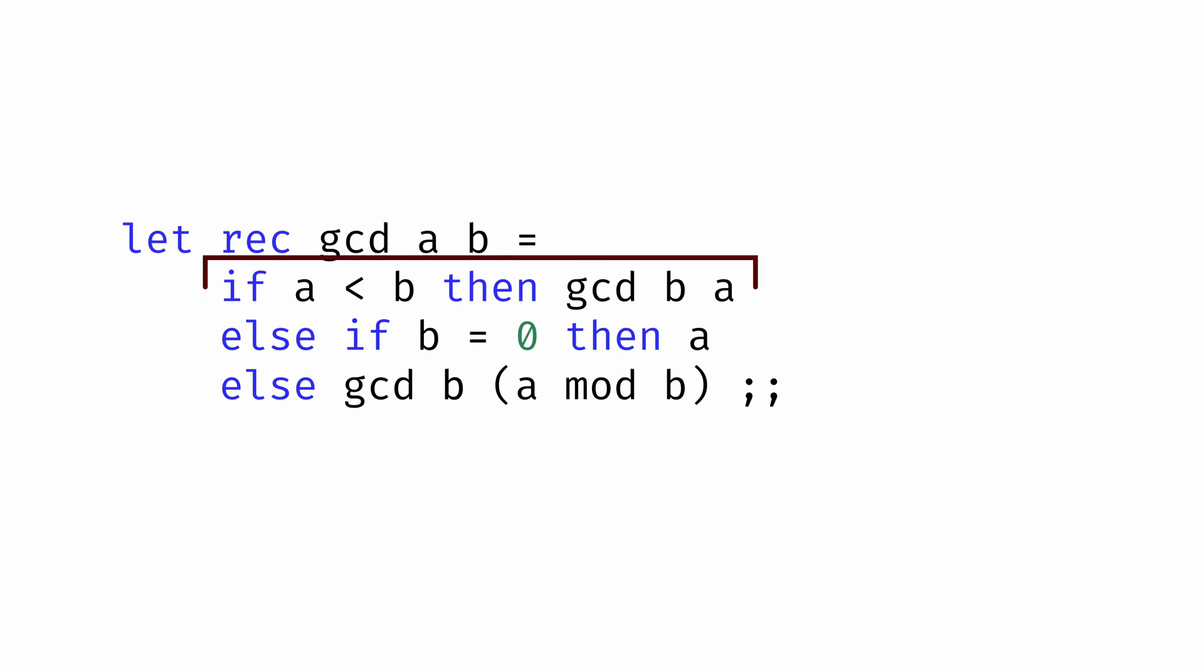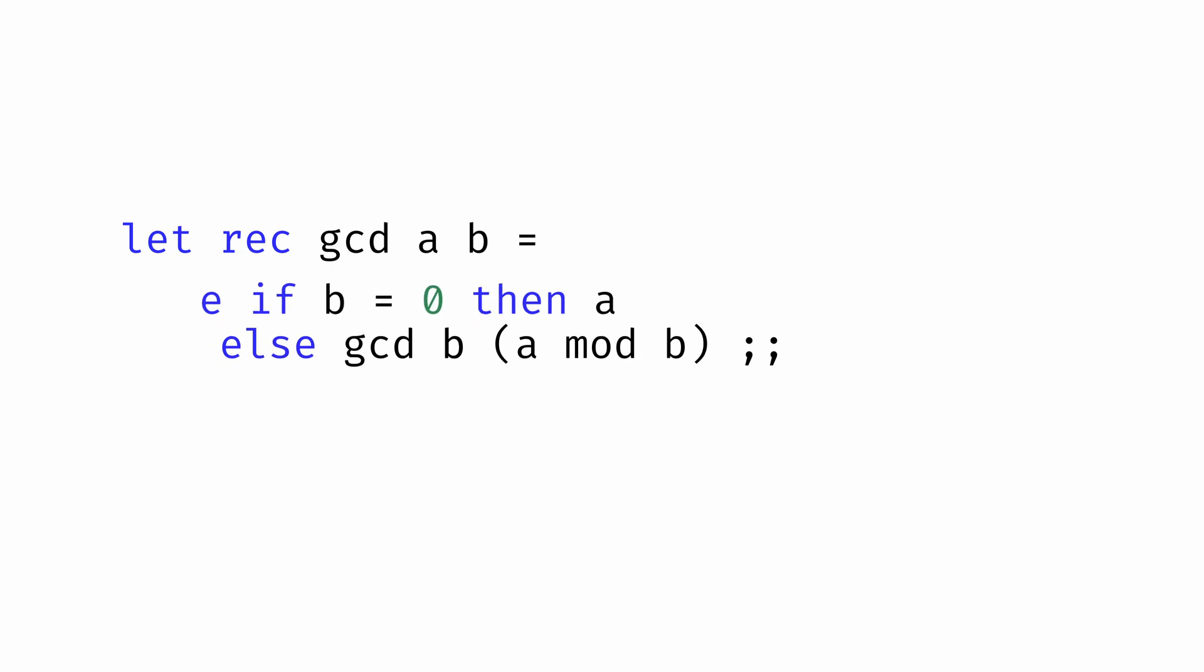And now, let's look at this first line of the function, where we check if a is less than b. What would happen if we didn't include this line? Well, we'd call the function again on b and a mod b. But if a is less than b, a mod b is just a. So we're calling the function on b and a, which is the same thing this first line is doing. As a result, we don't actually need the first line at all. The last line of the function already handles this case for us. And that leaves us with this function, our implementation of Euclid's algorithm for computing the greatest common divisor, which is much more efficient and also much more elegant than the first attempts we made at solving this problem.